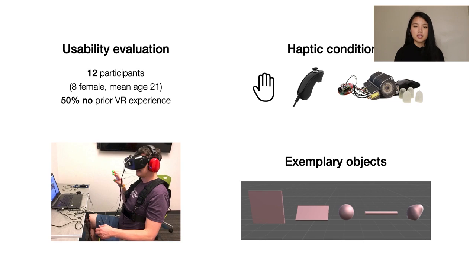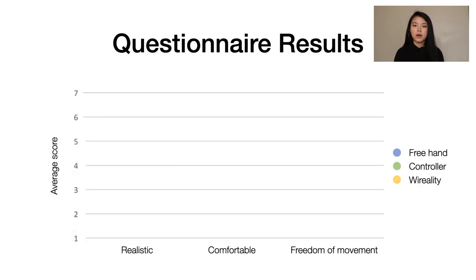After completing all objects in a condition, participants were asked three questions on a seven-point Likert scale. Specifically, the questions were how realistic was the feeling of the object, how comfortable was the interaction, and how free was your movement.